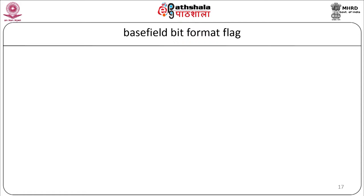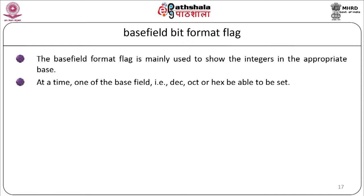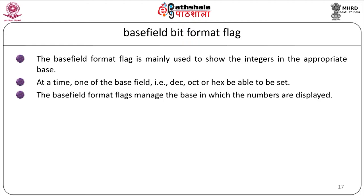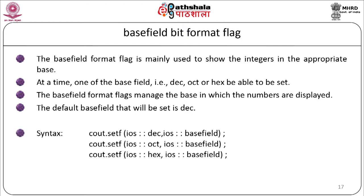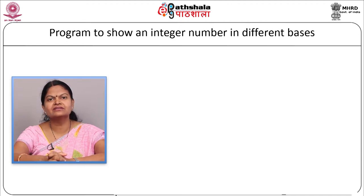The base field format flag is mainly used to show integers in the appropriate base. At a time, one of the base fields — decimal, octal, or hexadecimal — can be set. The default base field is decimal. The syntax is: cout.setf(ios::dec, ios::basefield); cout.setf(ios::oct, ios::basefield); cout.setf(ios::hex, ios::basefield). Now we will see a program to print a number in hexadecimal, octal, and decimal format using the set format field.